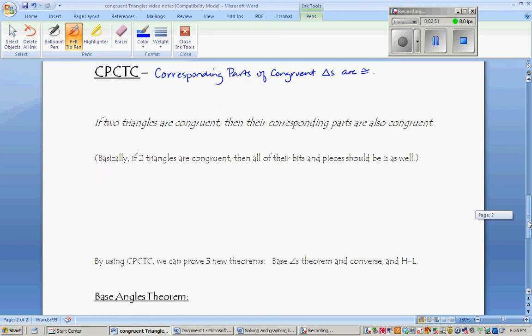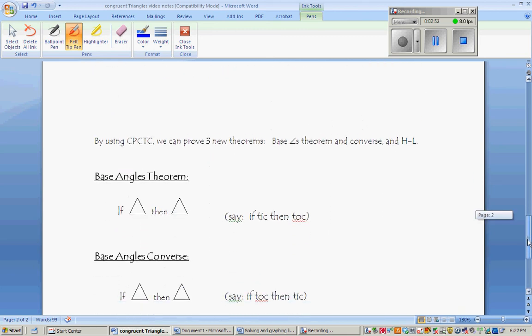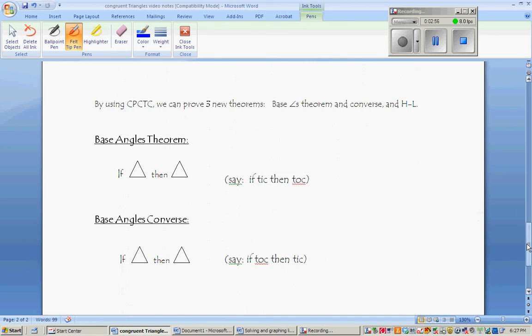So the last little bit that we need to know, if you haven't learned about isosceles triangles yet, is something called the base angles theorem and its converse. The base angles theorem works like this: It says that if two sides of a triangle are congruent—basically, if given an isosceles triangle—then the angles opposite them are also congruent. So the way you can write it is: if the sides are congruent, then the angles are congruent.